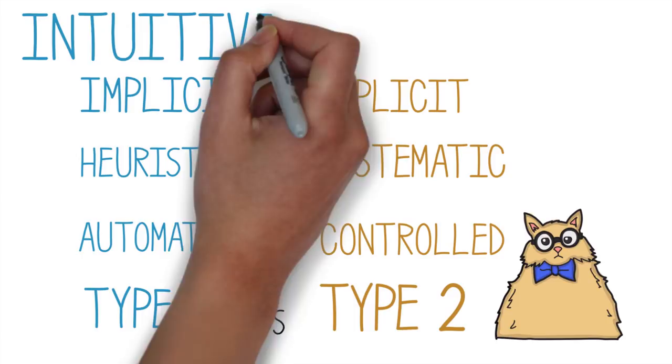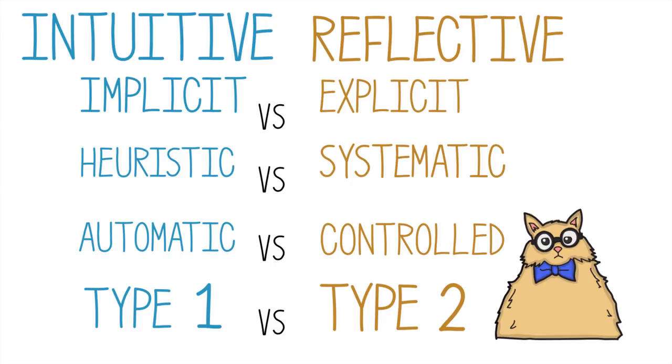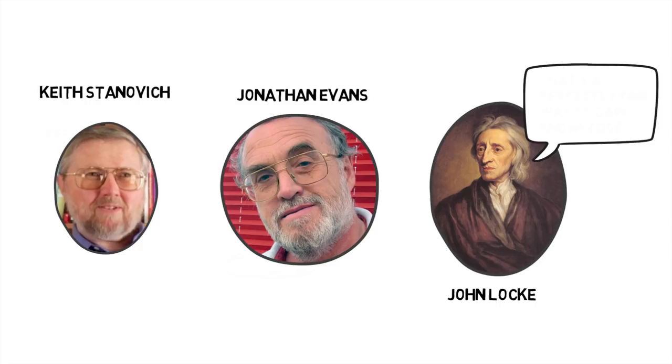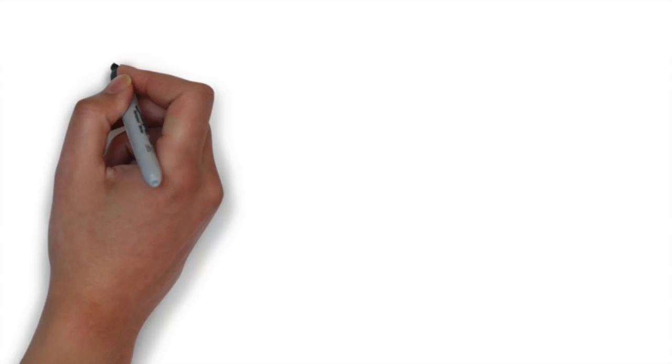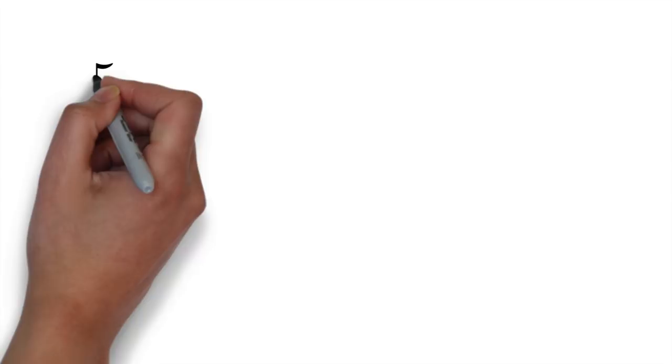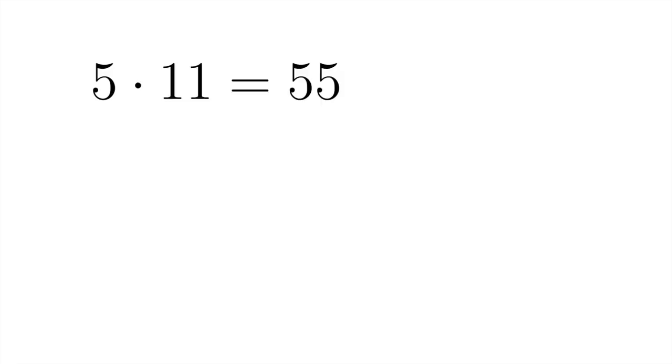The key difference between the two sides, according to leading psychologists like Keith Stanovich and Jonathan Evans, is exactly the difference that John Locke noticed. It's whether you have to go through a series of conscious steps. If I ask you to multiply 5 times 11, the answer, 55, probably comes to mind immediately and without effort. So that's intuitive for you.